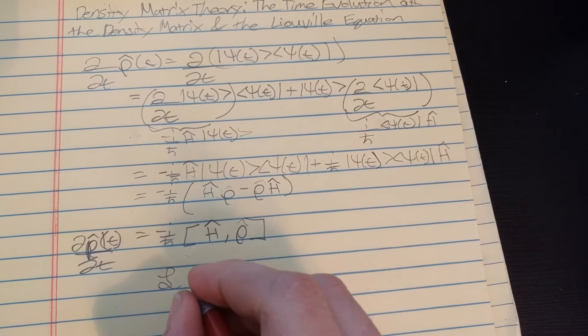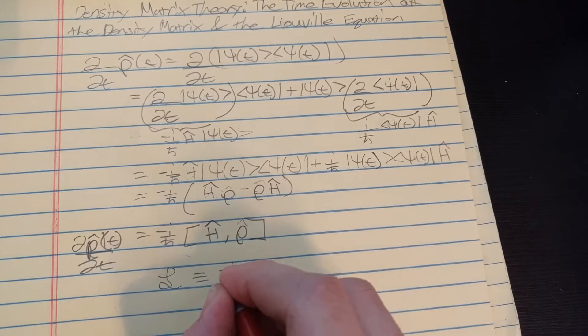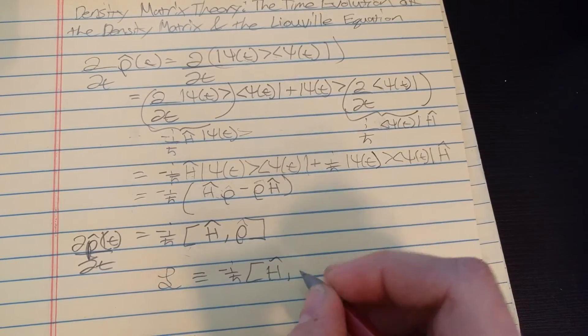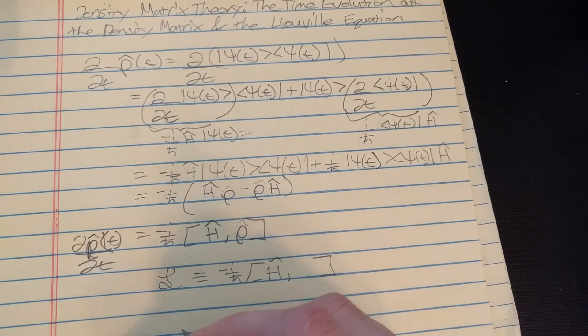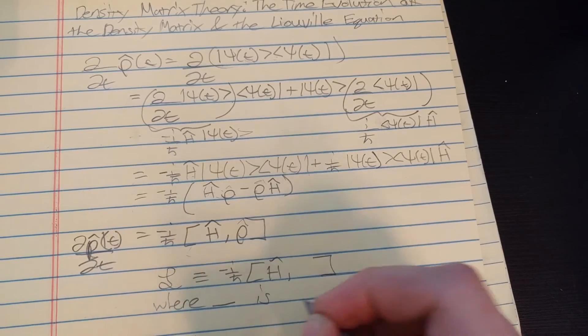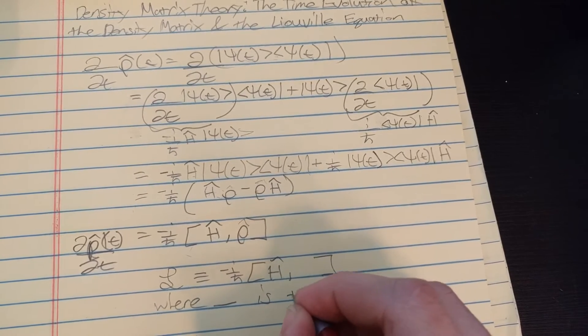You can define it as negative i over h-bar times the Hamiltonian times blank, where the blank is the thing you want to operate on.